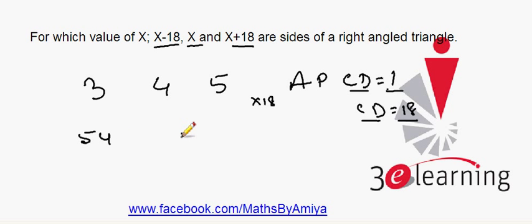By multiplying by 18, the sides are 54, 72, and 90. 54, 72, and 90 are in the Pythagorean triple and also in AP with common difference 18.